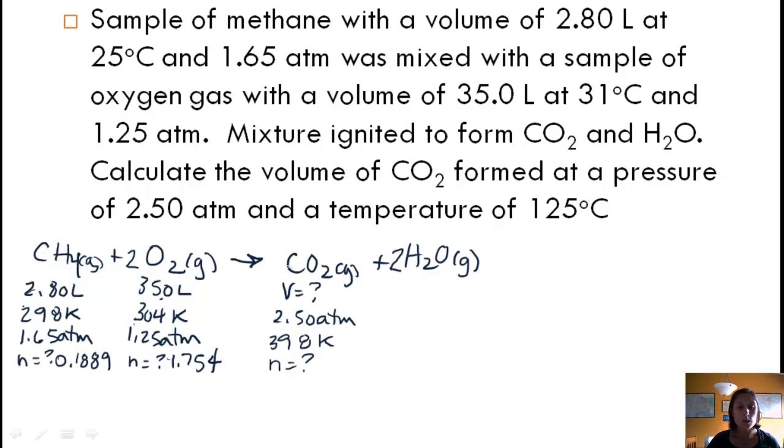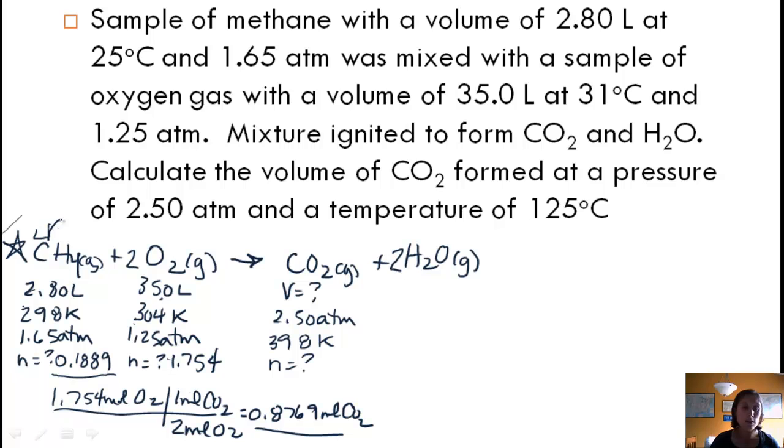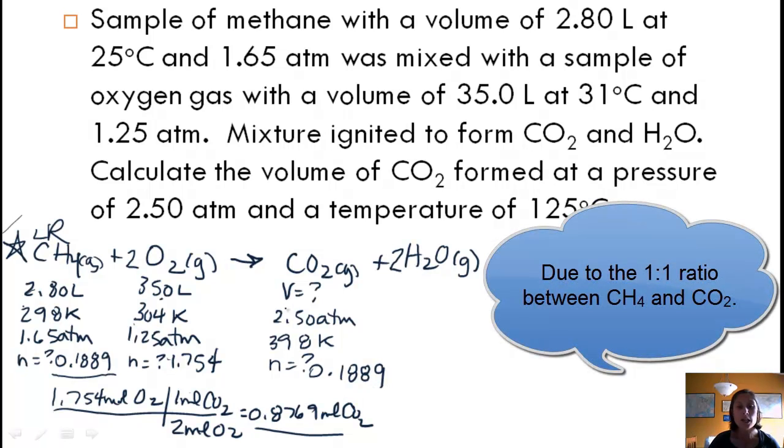Well, CH4 to CO2 is 1 to 1, but O2 to CO2 is 2 to 1. And so, if we take our 1.754 moles of O2 and use our mole ratio for every 2 moles of O2, there's 1 mole of CO2, and so that ends up giving us 0.8769 moles of CO2. So, now we want to compare. If we use up all the methane, we're going to have 0.1889 moles of CO2. If we use up all the oxygen, we're going to have 0.8769 moles of CO2. Well, we're not going to have enough methane to do that, so methane is our limiting reactant, which means that our number of moles of CO2 is 0.1889.